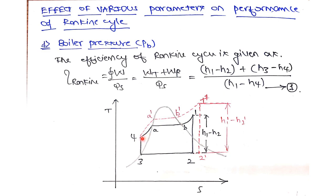The heat addition process occurs from state 4 to state 1. Since heats are always calculated as final minus initial, the heat addition Q_in = h1 - h4. Works are always calculated as initial minus final, and heats as final minus initial.